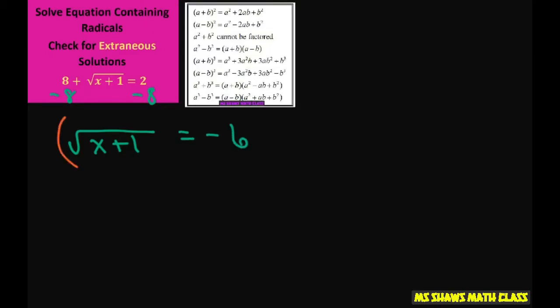Now square both sides and we're going to get x plus 1 equals 36. Subtract 1 from both sides and we're going to get x equals 35.